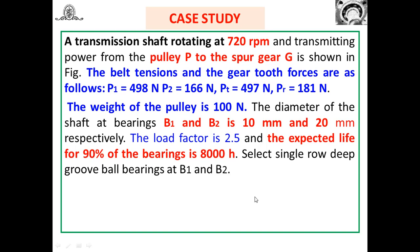The weight of the pulley is 100 N. The shaft diameter at bearing position B1 is 10 mm and at position B2 is 20 mm. The load factor is 2.5, and the expected life for 90% of the bearings is 8000 hours. We need to select single-row deep groove ball bearings at positions B1 and B2.